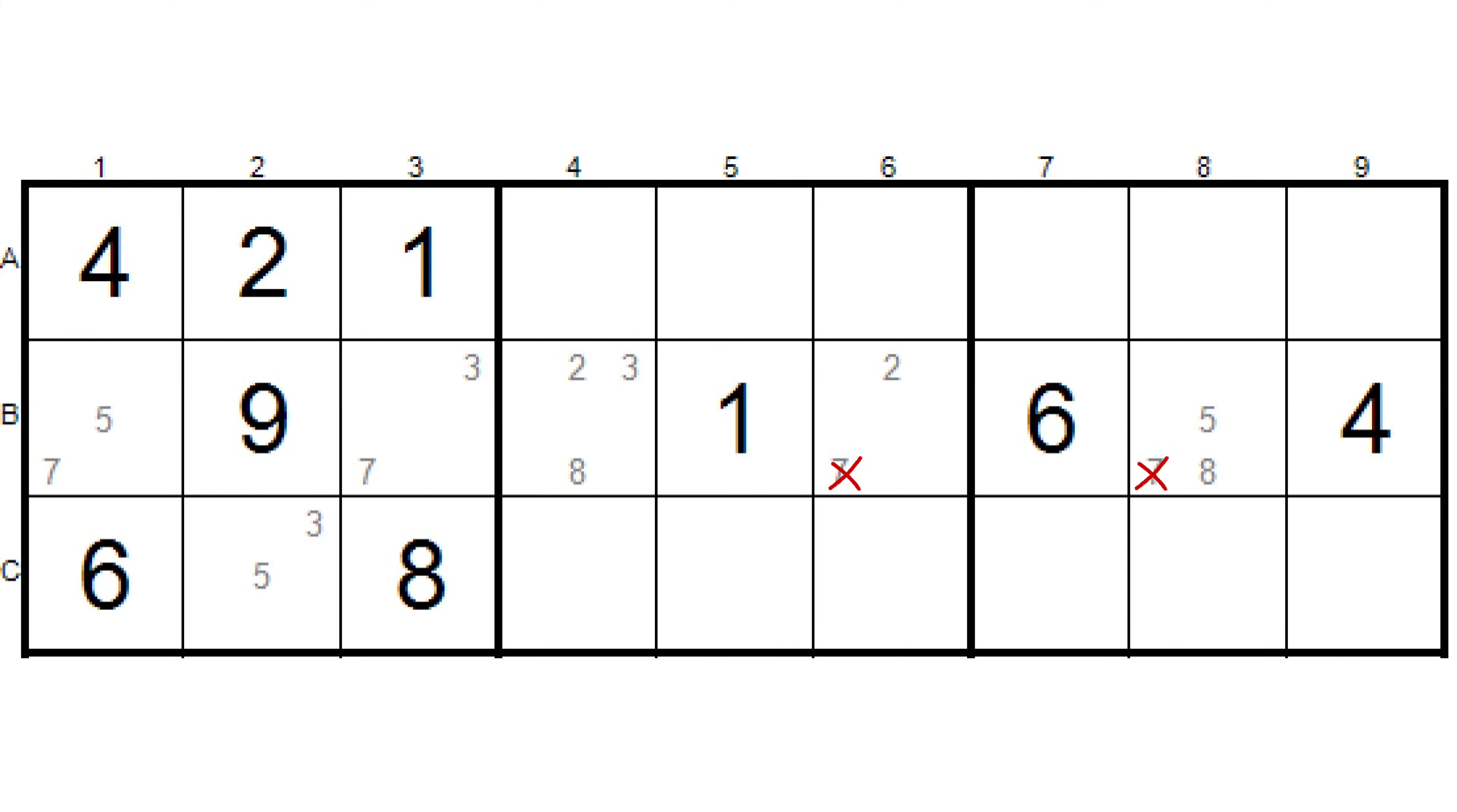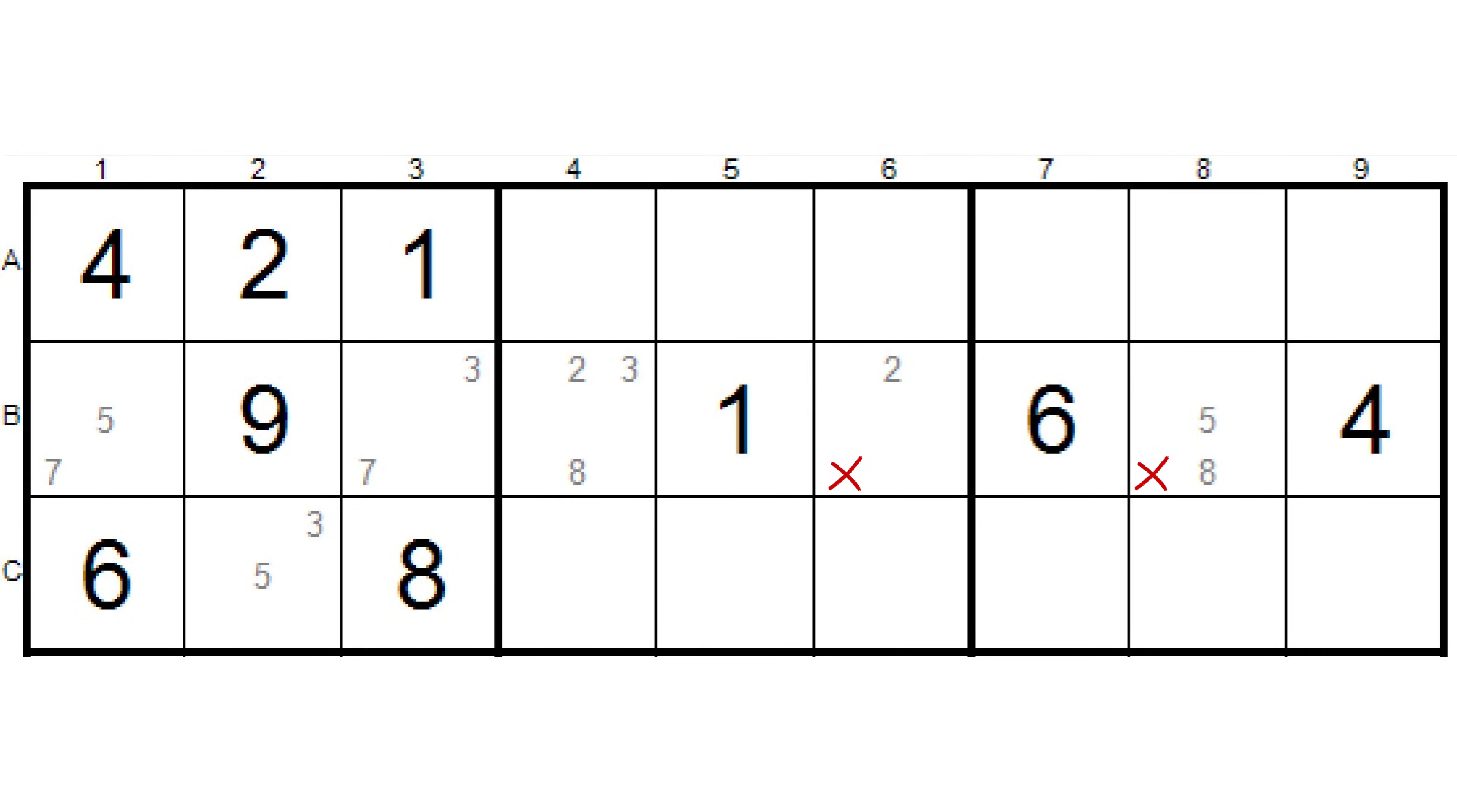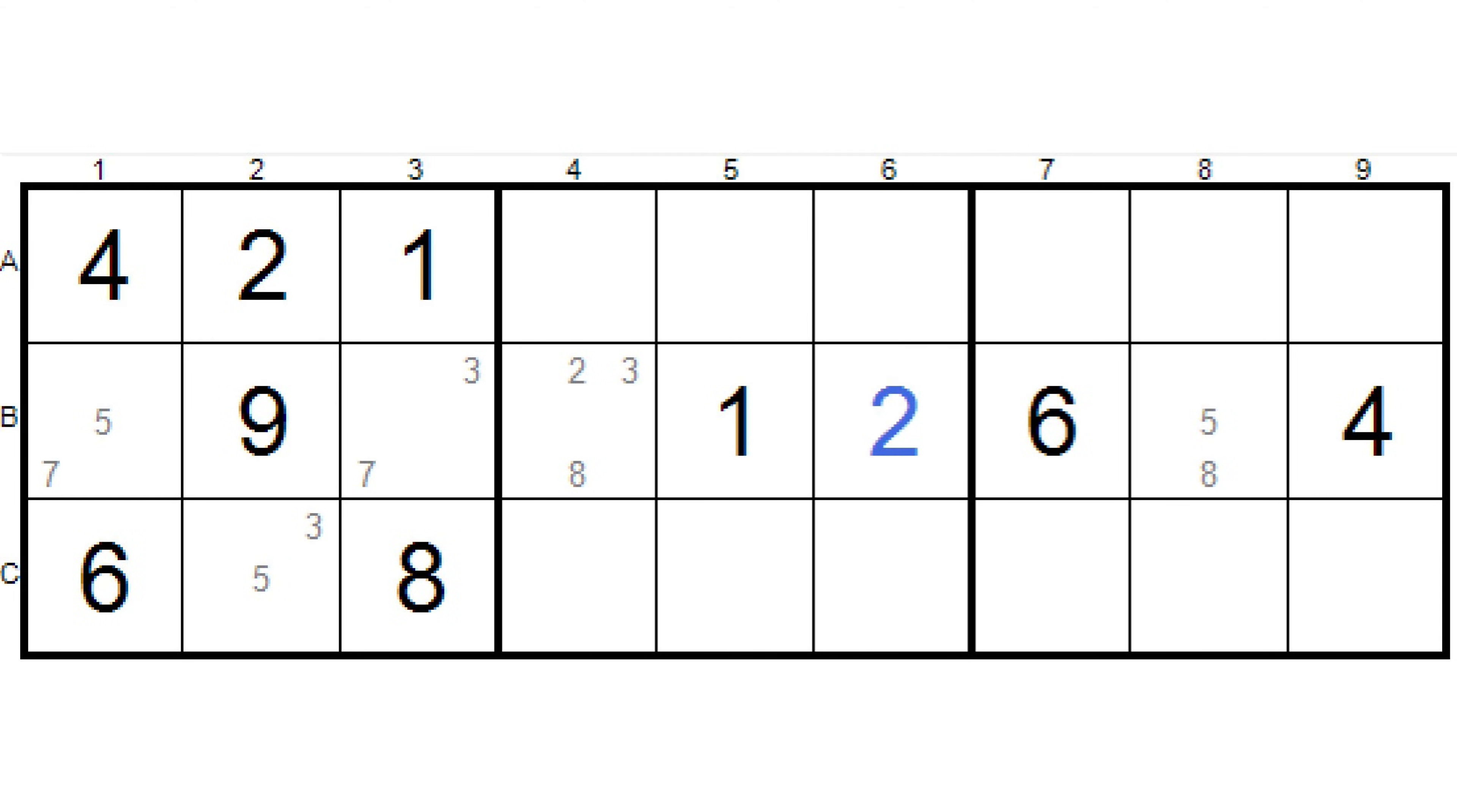Once we eliminate the 7s in row B, we are left with a naked single in column 6, the 2, so this cell becomes a 2.